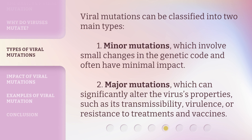Viral mutations can be classified into two main types. One: minor mutations, which involve small changes in the genetic code and often have minimal impact. Two: major mutations, which can significantly alter the virus's properties, such as its transmissibility, virulence, or resistance to treatments and vaccines.